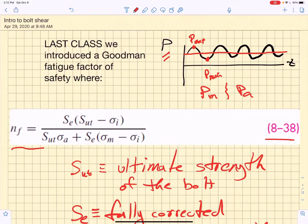That allows us to assign a fatigue factor of safety, so long as we know the fully corrected endurance strength of the bolts, the ultimate tensile strength, the preload, which we convert to a pre-stress, the stress amplitude, and the mean stress.